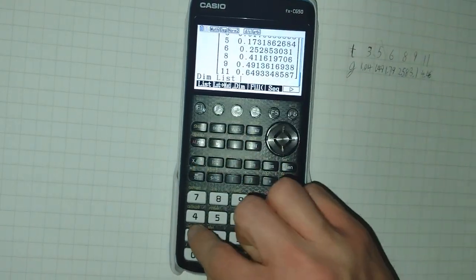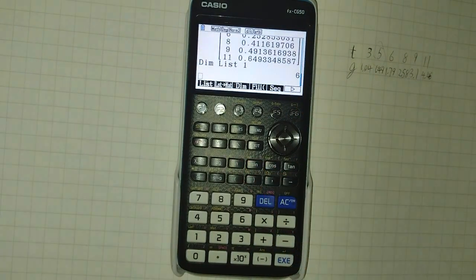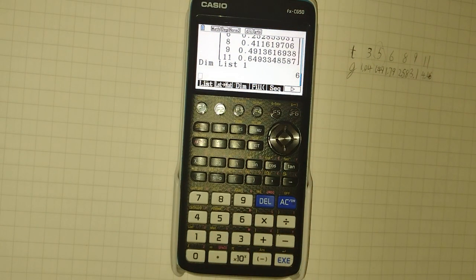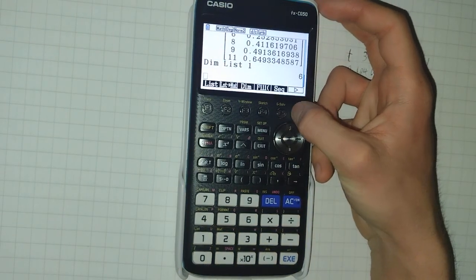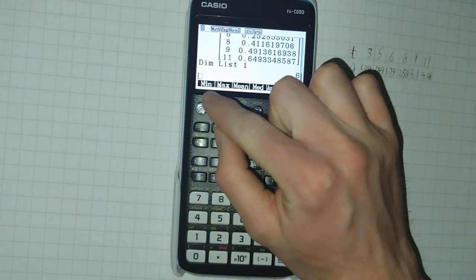DIM, list one, gets me the number of items in the list. I'll skip fill and seek for now, and go on to min.